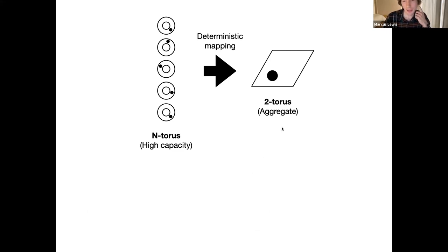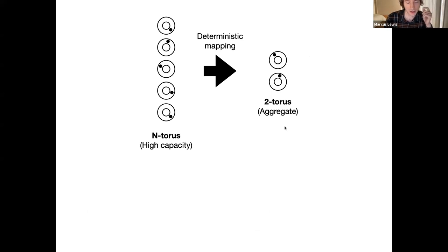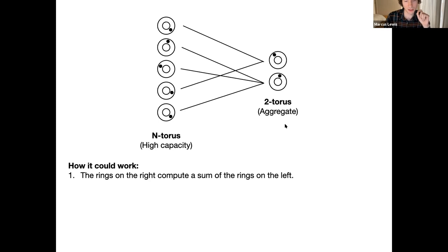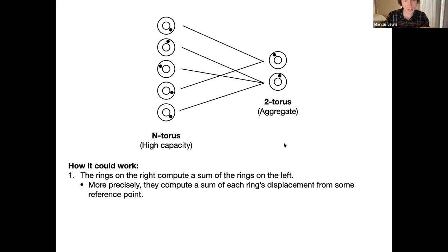I'm going to show you something really quite simple here — I just hadn't thought of it before. I'm drawing this almost like a neural network, where these rings are going to be determined by adding up some combination of them. The rings on the right compute a sum of rings on the left. More precisely, it computes the sum of each ring's displacement from some reference point. If you take the displacement vectors from these zero points and add them up, this gives you another point on the ring.